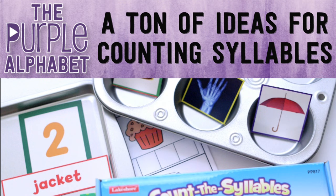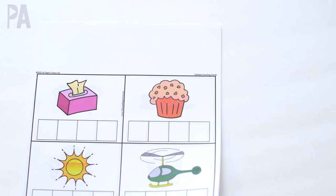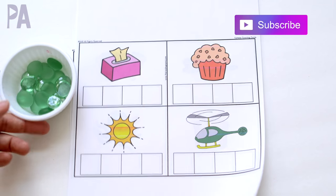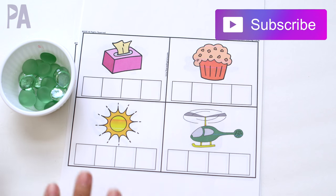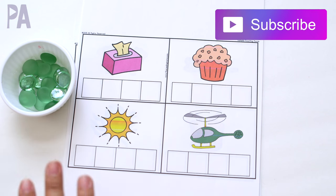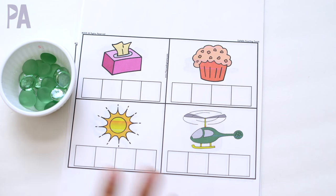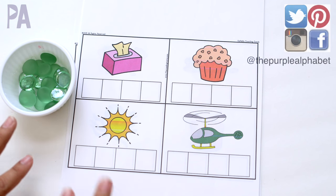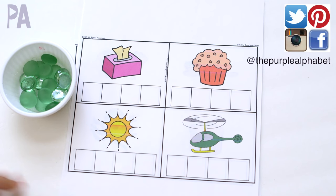Hey, hey you guys, it's Christina from the Purple Alphabet. We're talking about counting syllables today. I have a whole bunch of activities that you can do from all sorts of different levels, really simple learning how to count syllables all the way to a little bit more complex. These are in no particular order, and as always, I hope that you adapt them to what works with your child.